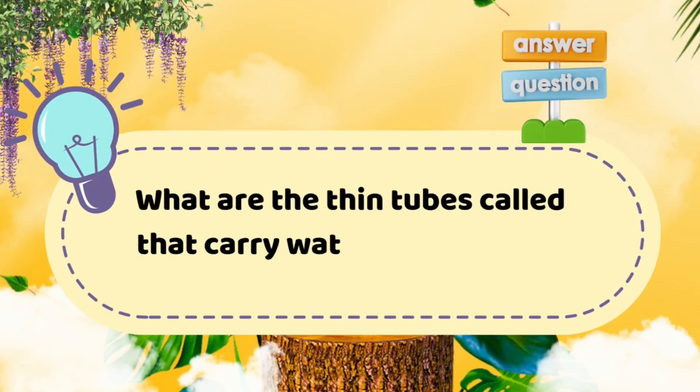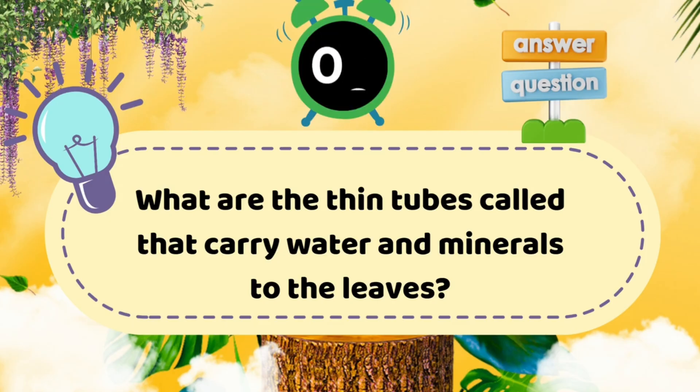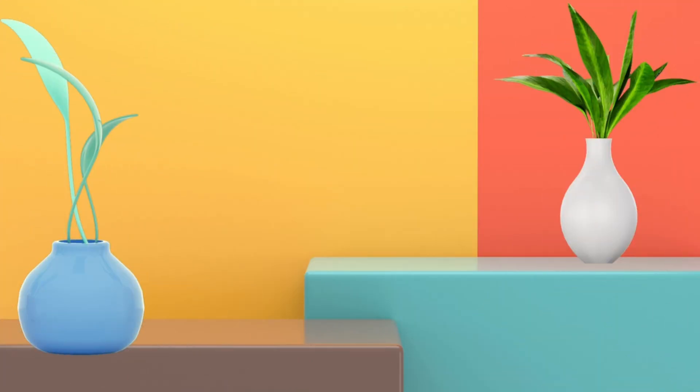Question four: What are the thin tubes called that carry water and minerals to the leaves? Answer: veins. Amazing, you're learning just like a scientist.